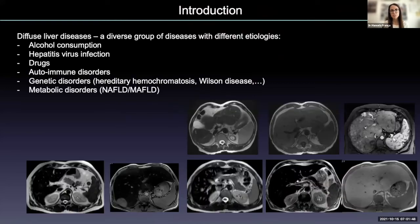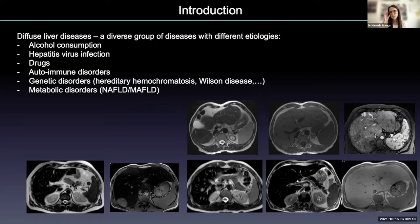Diffuse liver diseases comprise a different group of diseases with different etiologies, from alcohol consumption to hepatitis viral infection, drugs, autoimmune disorders, genetic diseases, or metabolic diseases. Although there are no pathognomonic imaging features for each disease, some of the imaging findings indicate the presence of parenchymal abnormalities, and they should be recognized because frequently radiologists are the first ones to suspect diffuse liver disease.